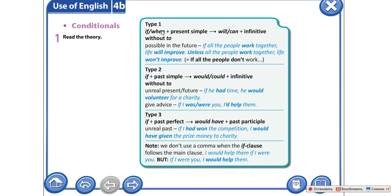The first type of conditional sentence. In the if clause we use present simple, in the result we use will and infinitive without to. And the first type of conditionals we use when we are talking about the possible in the future.